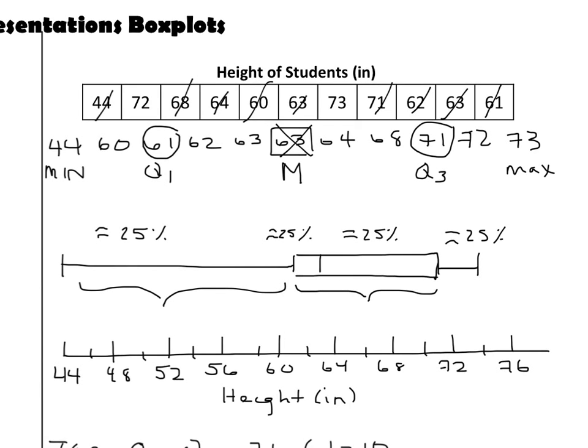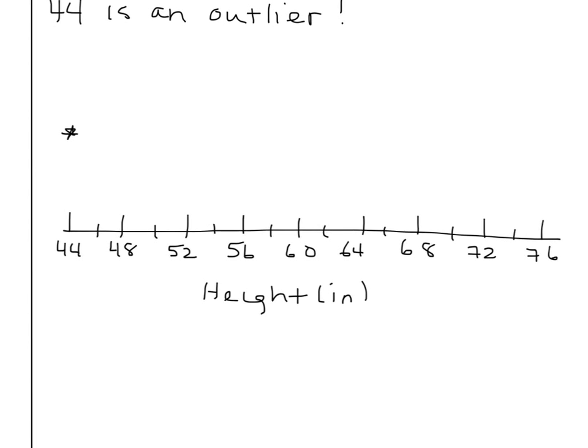So we go back to our list. The next number is 60. So that is going to be the start of our box and whisker plot.